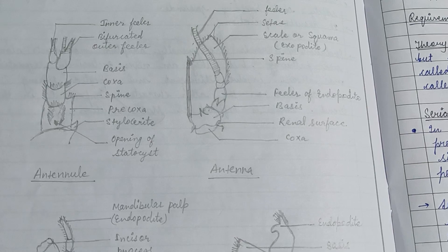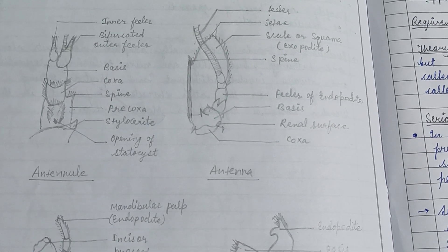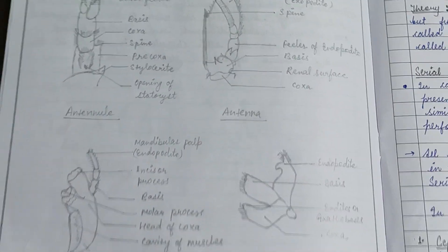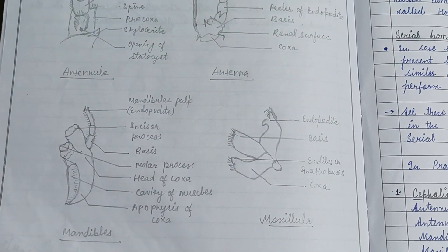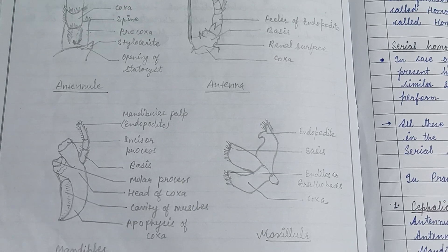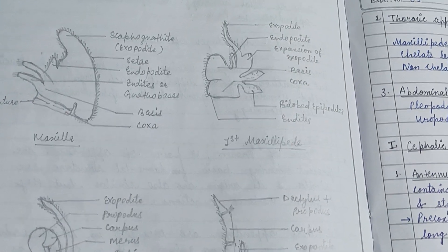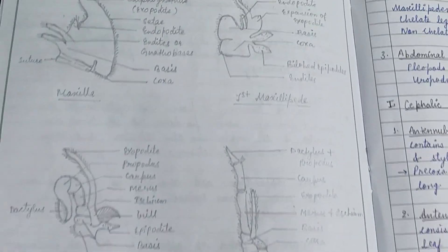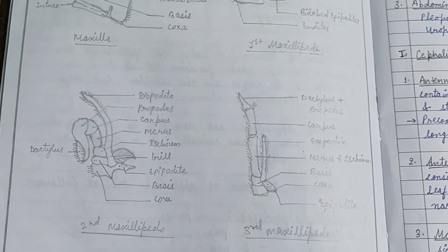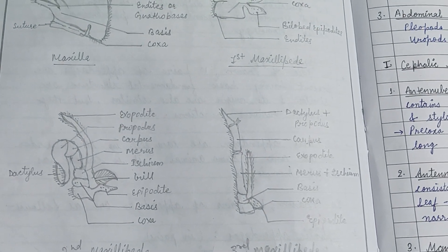Here are the figures of the antennule, antenna, mandibles, maxillula, maxilla, 1st maxillipede, 2nd maxillipede, and the 3rd maxillipede.